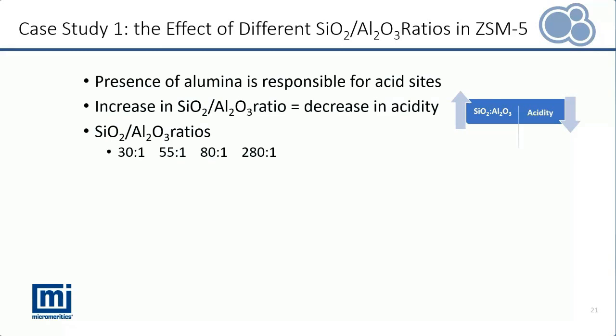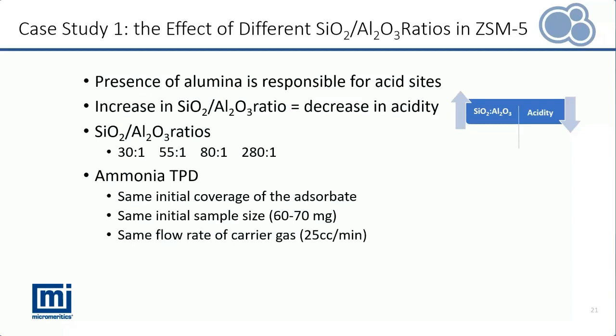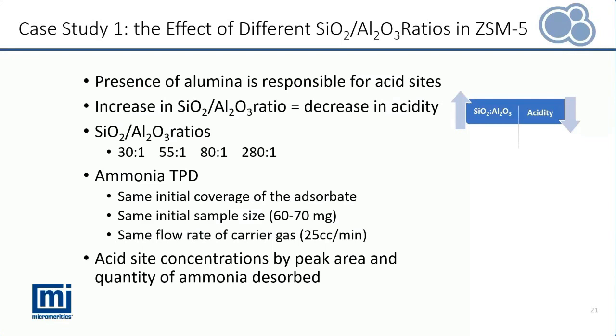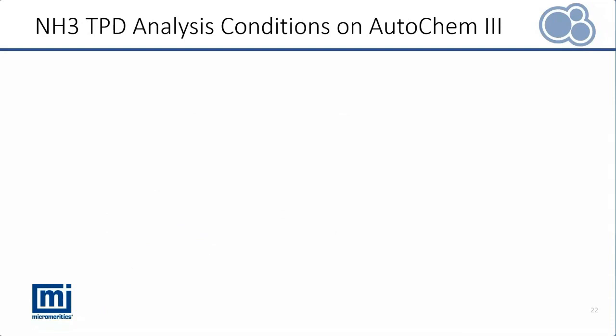Ammonia TPDs were carefully carried out, ensuring the same analysis conditions such as initial coverage of ammonia, initial sample size, and the flow rate of the carrier gas, which was helium. We will compare the acidity of each sample by the peak area and the quantity of ammonia desorbed, and discuss the heat of desorption trend.